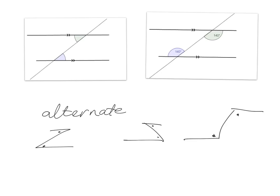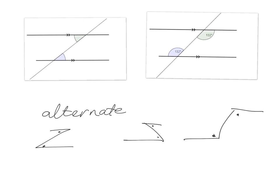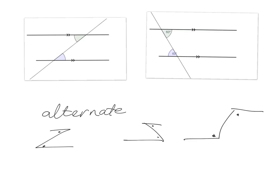If you have a look at the little videos carefully, you will see that, again, no matter where we put the transversal, your alternate angles remain the same. As the green gets smaller, so the blue one gets smaller. Have a look at this one where we've got the sizes labelled in. As you move the transversal, the green and the blue remain exactly the same size as each other. So your alternate angles on parallel lines are equal to each other.